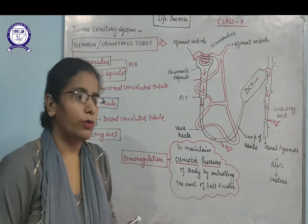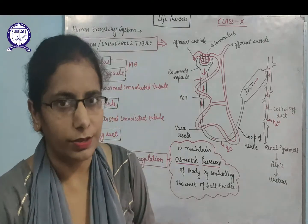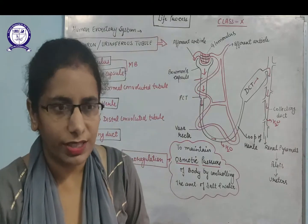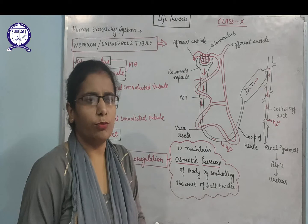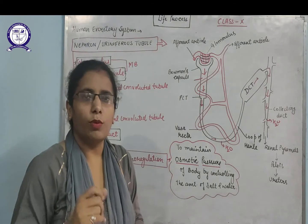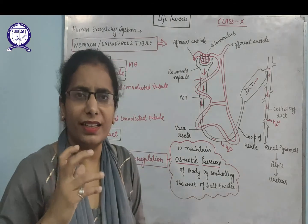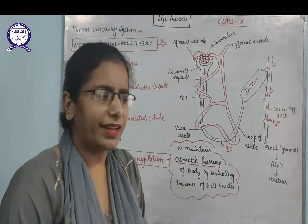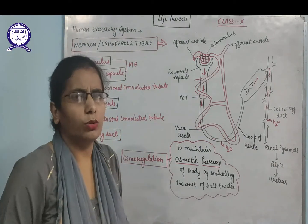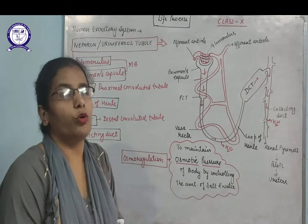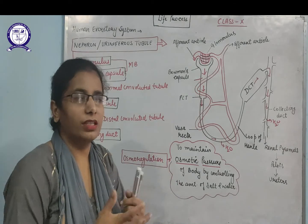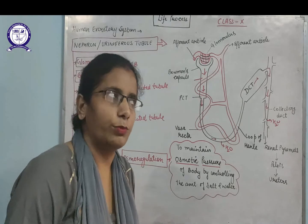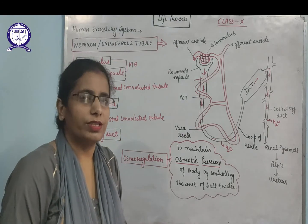Now, what about excretion in plants? Plants do not have a special organ for excretion like humans. They remove their waste in the form of resins, wax, dead leaves, and dried flowers — releasing waste directly without specialized organs, because they are not as complex as humans. Resins, gums, wax, dead leaves, and dry flowers that fall from plants are considered plant waste.